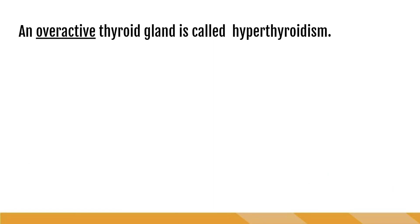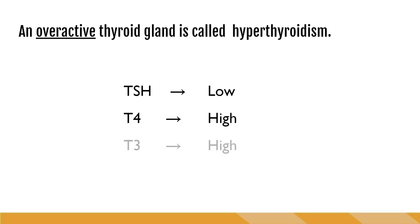Opposite of the under-functioning thyroid gland is an overactive thyroid gland, which is called hyperthyroidism. Hyperthyroidism is when the thyroid is producing too much hormone, which can be due to a malfunction of the thyroid gland itself or a nodule within the gland. In hyperthyroidism, the thyroid is producing too much hormone, so the hypothalamus never gets the message to produce TRH, which means the pituitary gland doesn't produce TSH, making TSH levels low and T4 and T3 levels high.